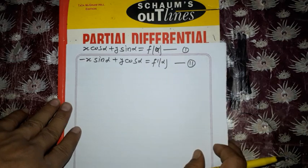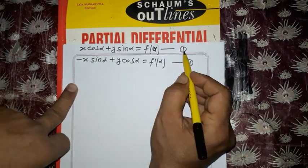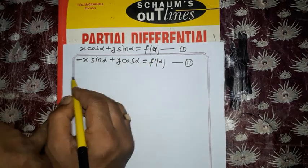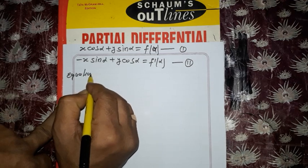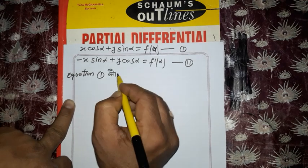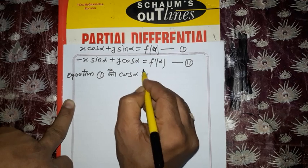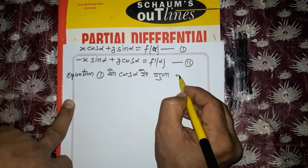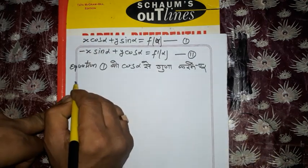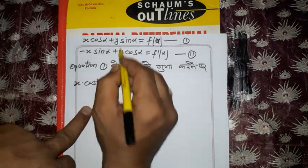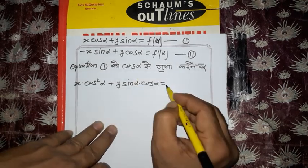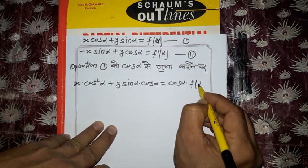To find x and y, I will multiply equation 1 by cos α and equation 2 by sin α, then add or subtract. Multiplying equation 1 by cos α gives: x cos²α + y sin α cos α = cos α · f(α). This is equation (a).